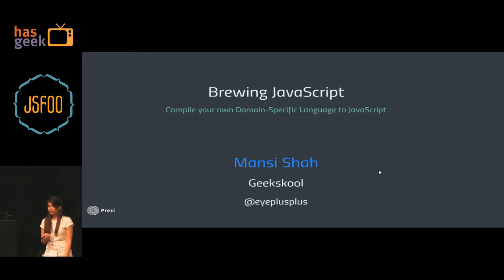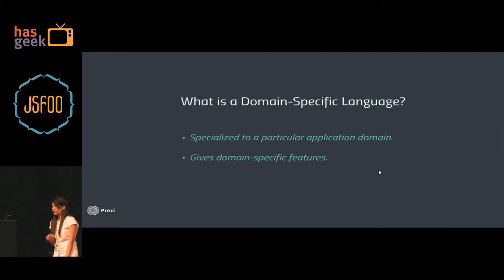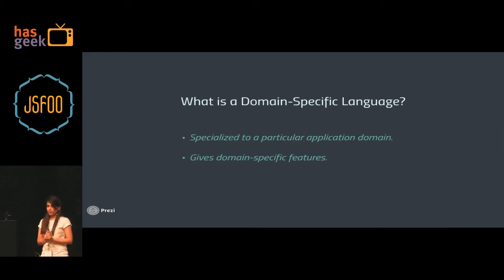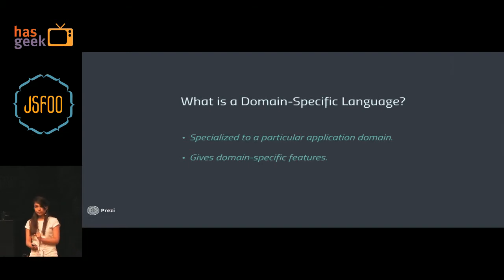Let's start by understanding what a domain specific language is. A domain specific language is a language that is specialized to perform a particular application. It is different from a general purpose language in the way that it has domain specific features and characteristics.